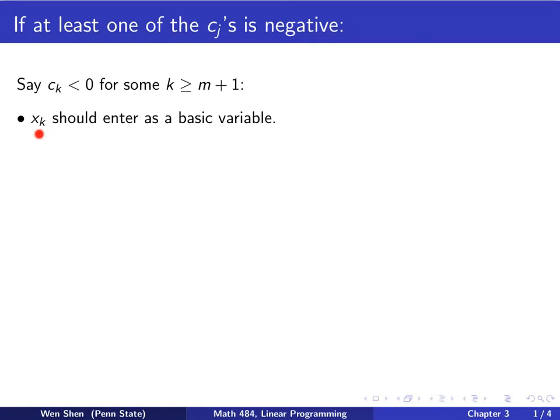And then we know that we should let x_k enter as a basic variable. And then c_k might take a positive value and make the objective function smaller. So that is an easy conclusion.